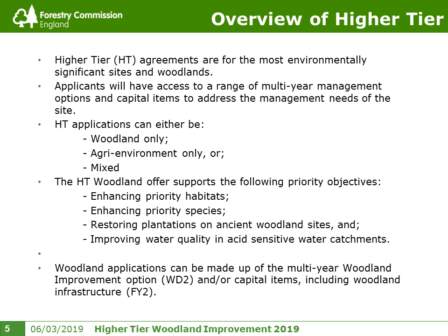There are three types of higher tier applications: woodland-only, agro-environment-only, or a mix — where you're applying for grants on both the woodland and the agro-environment part of the holding. The scheme is also targeted. The aim is to help enhance woodland for priority habitats, priority species, restore plantations on ancient woodland sites, and support management activity or restructuring of woodlands to improve water quality in acid-sensitive catchments.